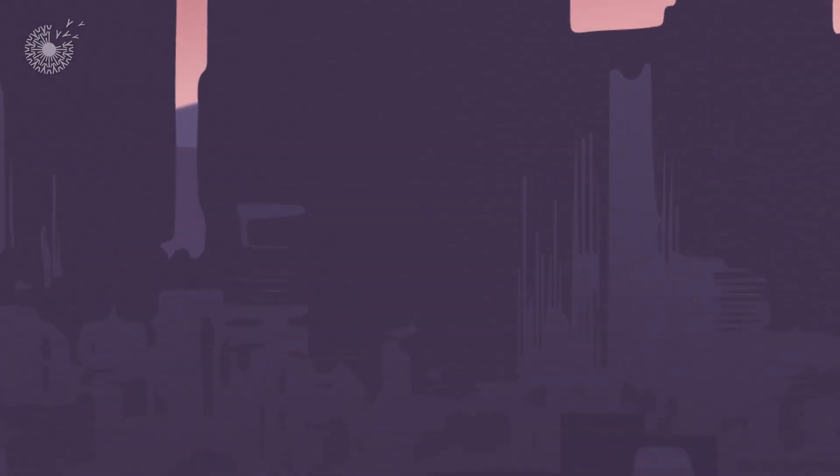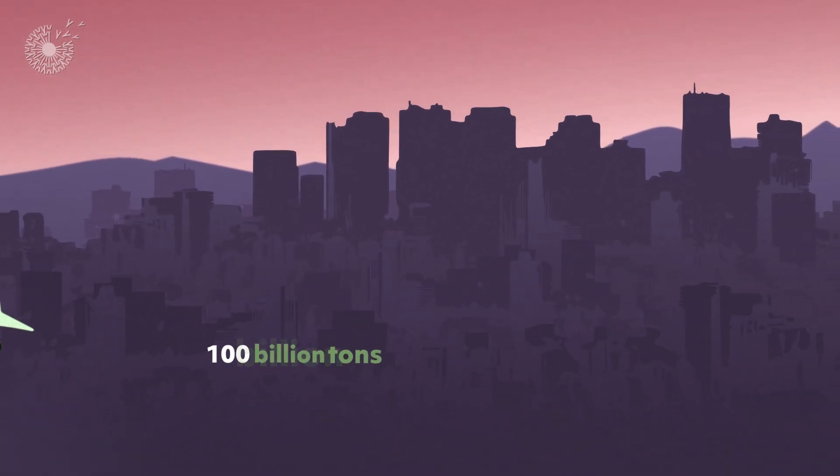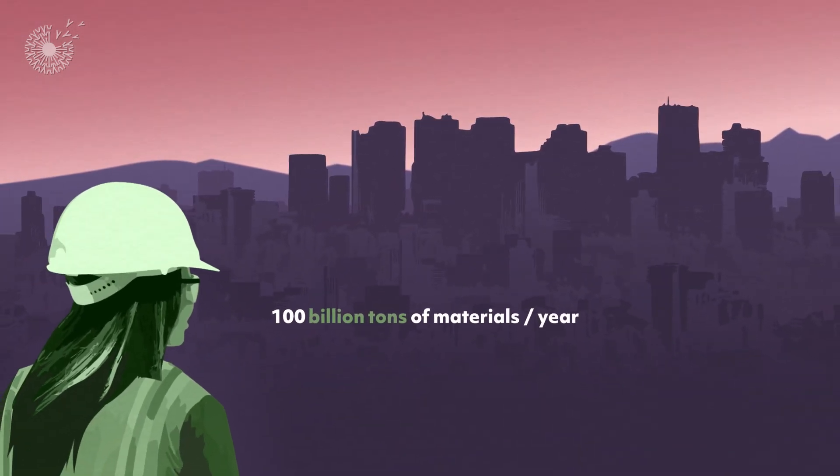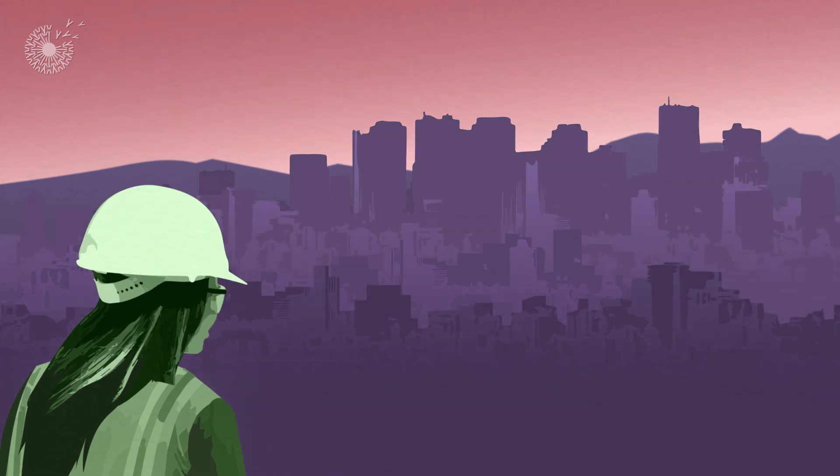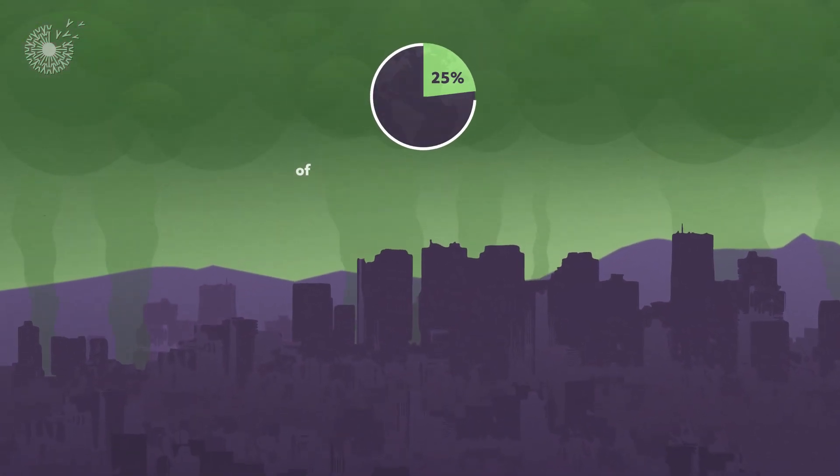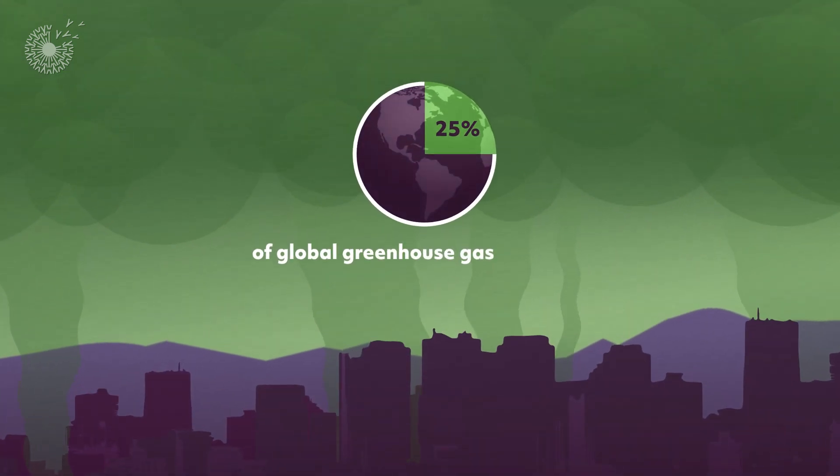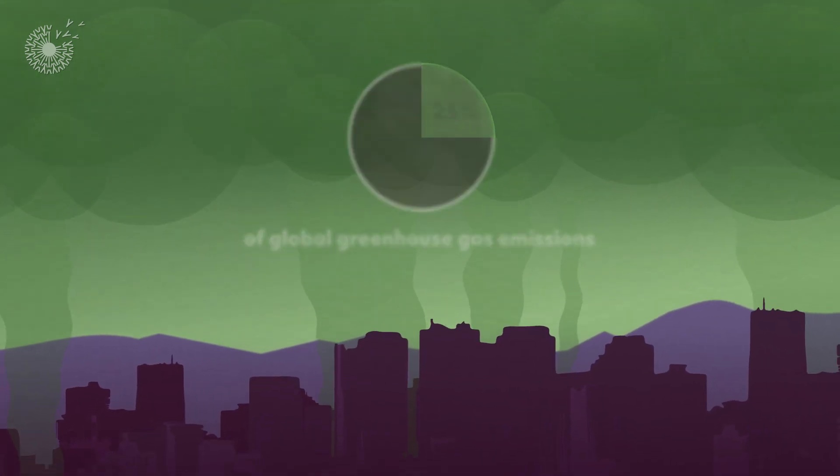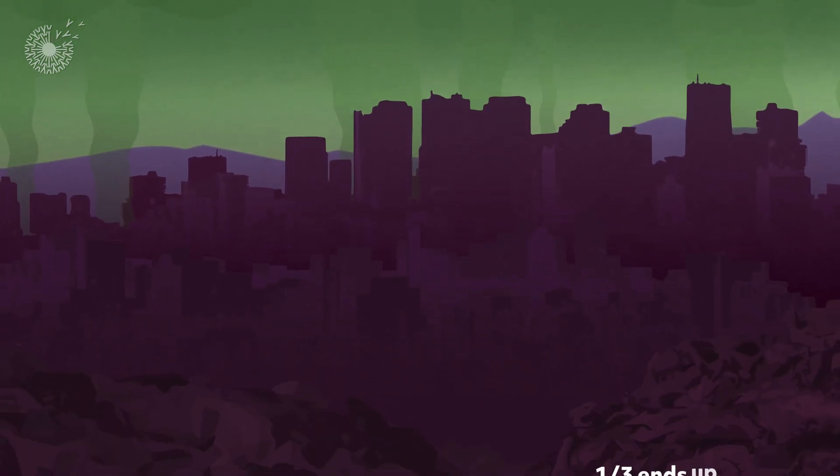Humans meanwhile use about 100 billion tons of material per year to make everything in our built environment. This produces about 25% of global greenhouse gas emissions, and a third of this material ends up as waste.